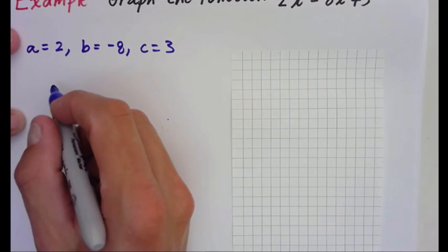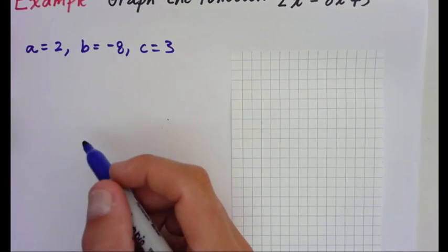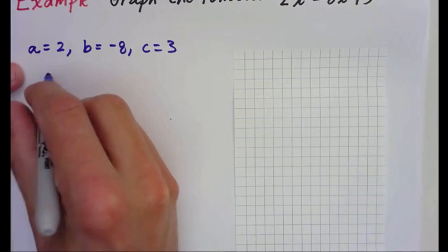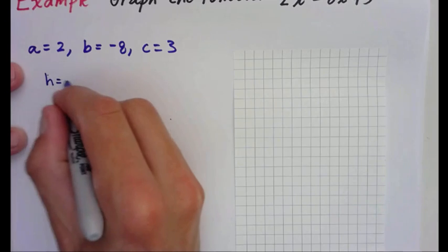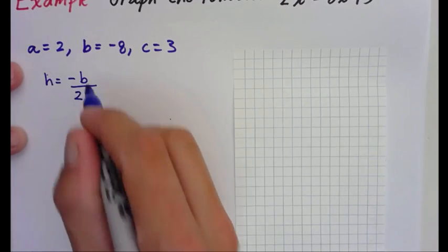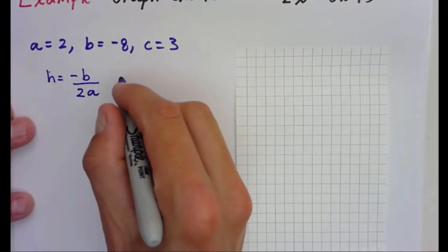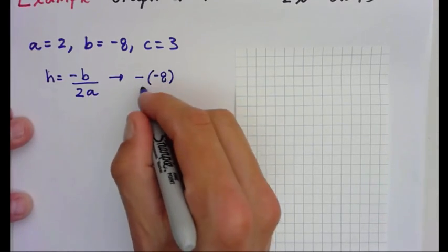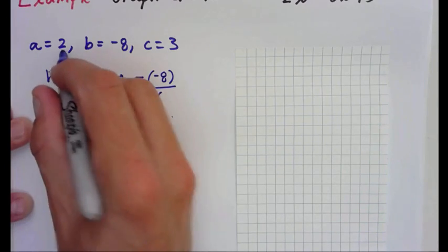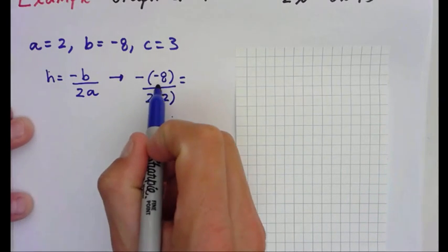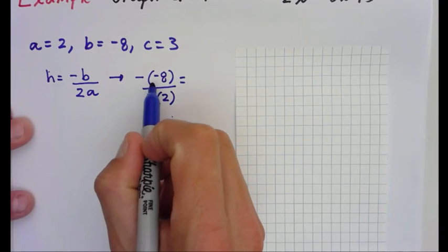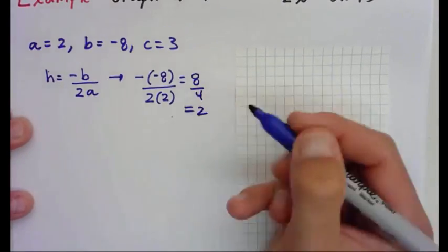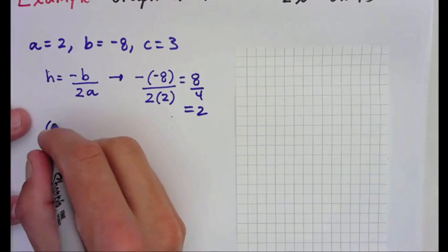Now we're going to find the vertex. So h is equal to negative b over 2a. Let's substitute: we're going to have the opposite of negative 8 over 2 times a, which is 2. The opposite of negative 8 is 8, so 8 over 4 is 2. So I found my x coordinate, also called the axis of symmetry.